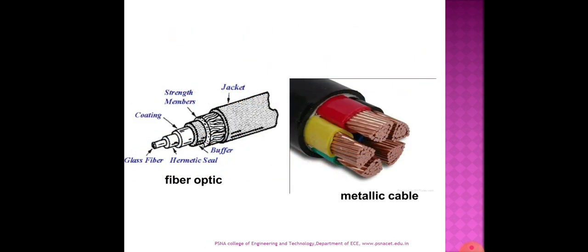This is a sample fiber optic cable construction and a comparison with metallic cable. Fiber optic cable consists of a jacket, a buffer, and strength members on the outer side. There is a coating and a hermetic seal is provided, and inside that there is a glass fiber.